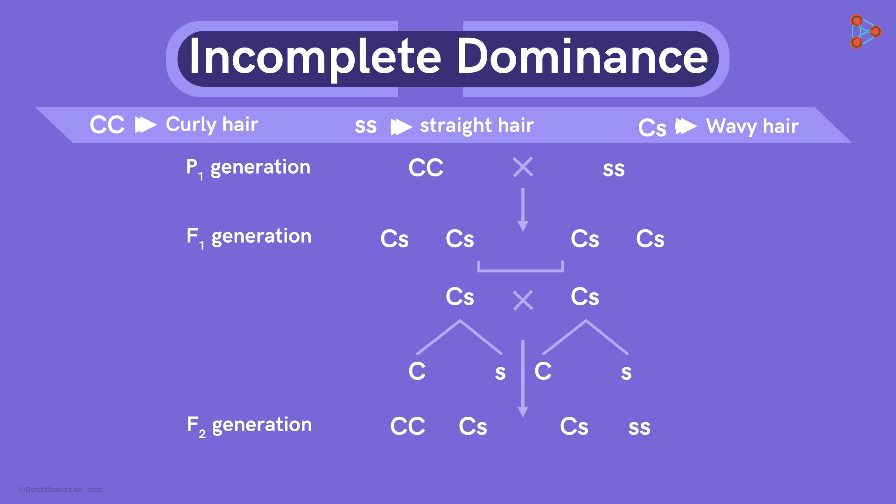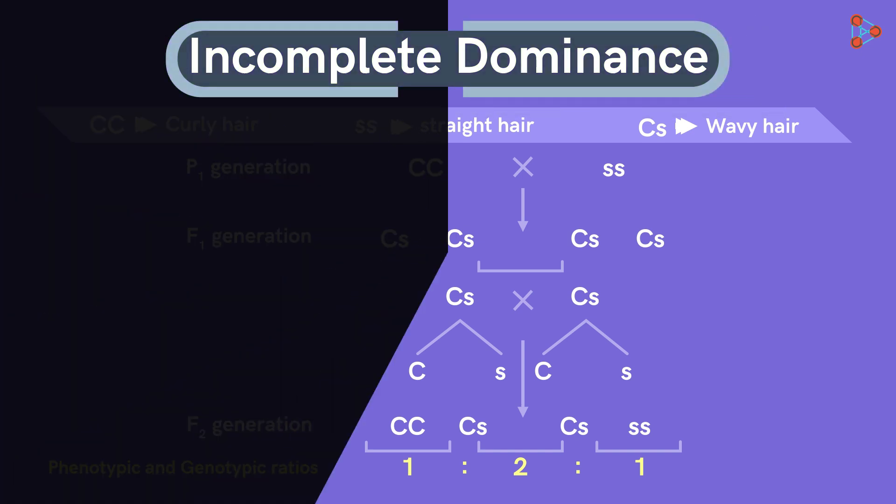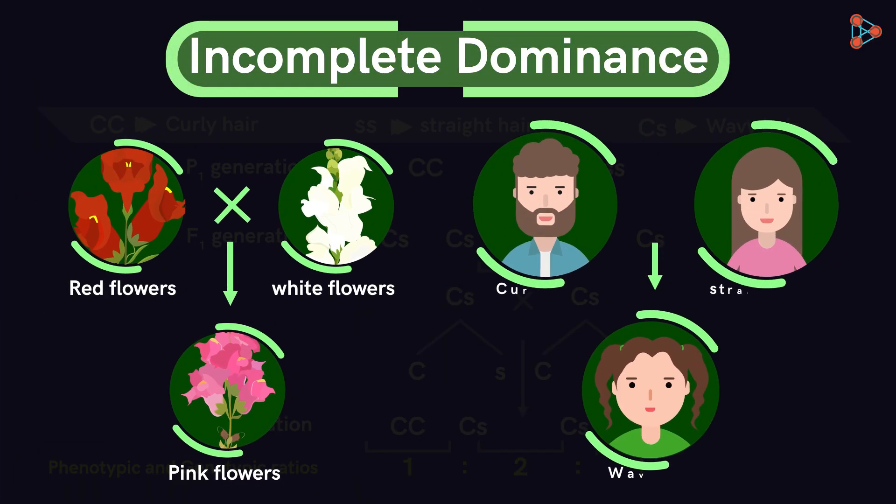This is what we get on solving this further. The F1 generation will all have wavy hair, that is a blend of curly and straight hair. So all of the offsprings here will have CS as the genotype and wavy hair as the phenotype. And the F2 generation will be obtained in the ratio 1 to 2 to 1, both phenotypic as well as genotypic. This is how incomplete dominance is found not only in plants but even in animals.